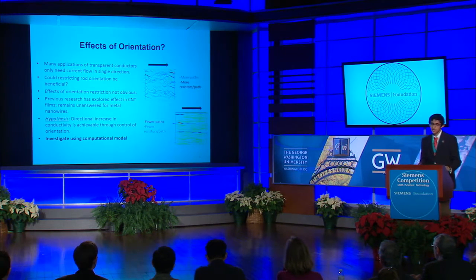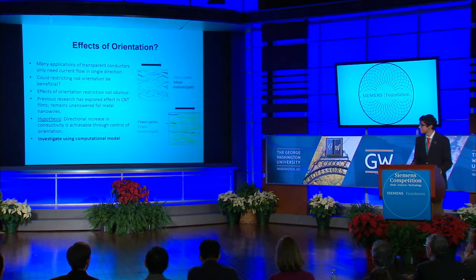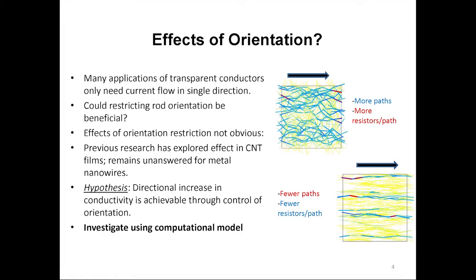The images on the right show maps of current flow in random metal nanowire networks, with dark blue or red segments having high current density. The top sample is isotropic, while the bottom sample has restricted orientation. As you can see, the bottom sample with restricted orientation has shorter conducting paths that will thus have a lower resistance and increase in conductivity. However, there are also far fewer parallel paths in total, which will decrease conductivity. It's not certain how these competing effects will interact, and if there will ever be an increase in directional conductivity as a result. I decided to investigate this effect, hypothesizing that a directional increase in conductivity would be achievable through control of orientation.